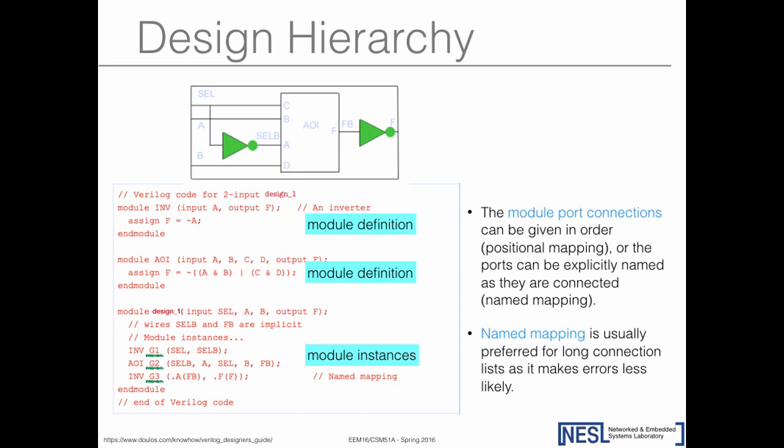What value does an implicit wire have at the start? At the beginning of simulation, everything is don't care. If that confuses you, you can of course define the wire explicitly. That's something Verilog lets you do, but it's optional for single-bit wires.